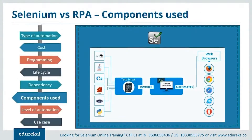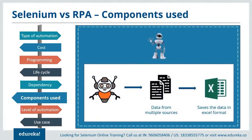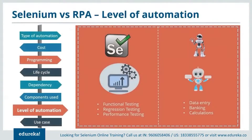Talking about the major component used to automate a task: Selenium uses web drivers. Test scripts written in any programming language can be invoked by the system and are automated using Selenium WebDriver, which can run on different browsers like Chrome, Safari, and Mozilla. Whereas RPA makes use of robots to complete a task. RPA bots help in automating data from different sources and save it in the form of an Excel file where data can be found in sequence.